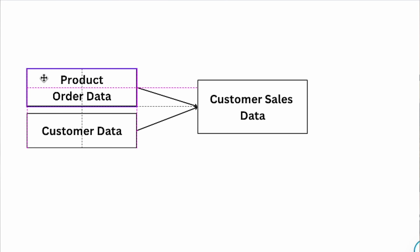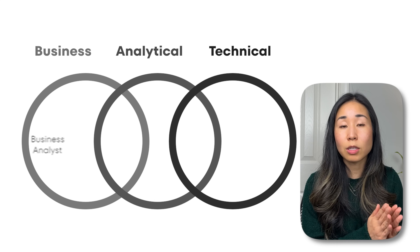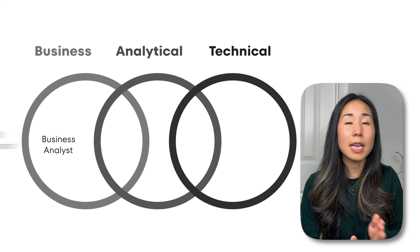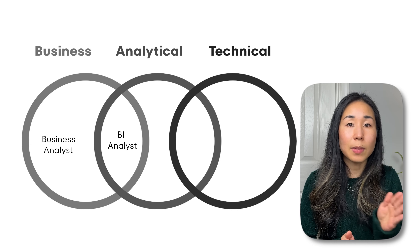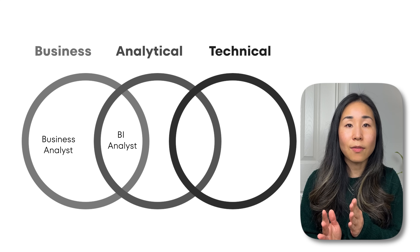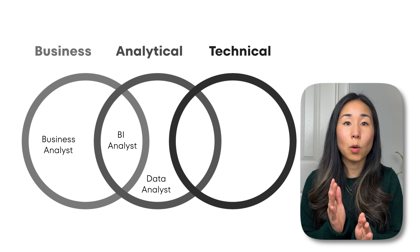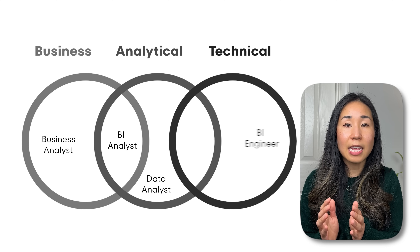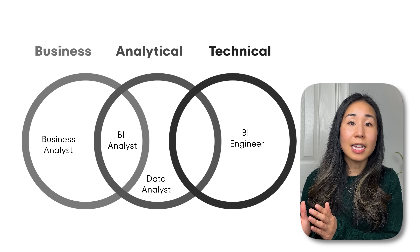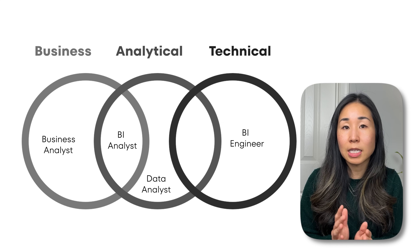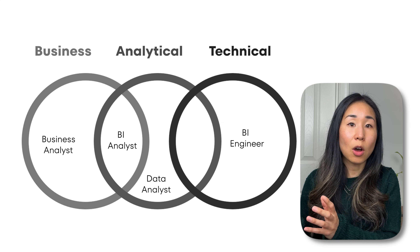The BI engineer uses tools such as ETL, data warehousing, and data modeling to make sure that the data is optimized and ensure the quality of the data. To put it all together, going from roles closest to the business to the most technical: the business analyst sits closest to the business, then the BI analyst sits between the business and the analytics, then the data analyst is focused more on analytics and data, and the BI engineer is the most technical because they're also working on the backend of the data.